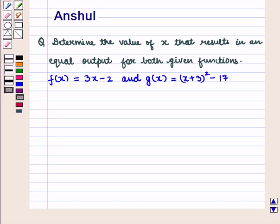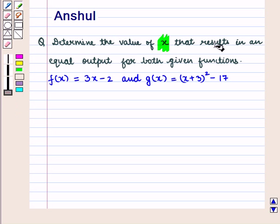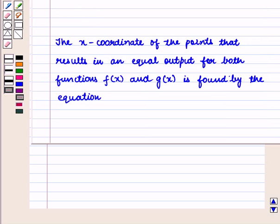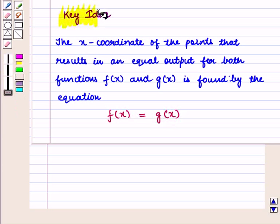Hello and welcome to the session. In this session we are going to discuss the following question: Determine the value of x that results in an equal output for both given functions, where f of x is equal to 3x minus 2 and g of x is equal to x plus 3 whole square minus 17. The x coordinate of points that results in an equal output for both functions is found by the equation f of x is equal to g of x.